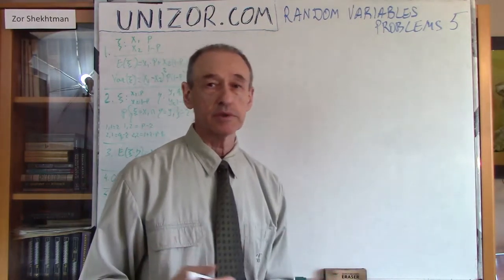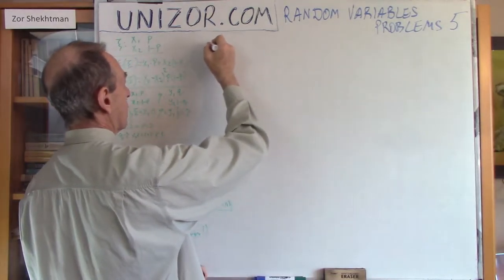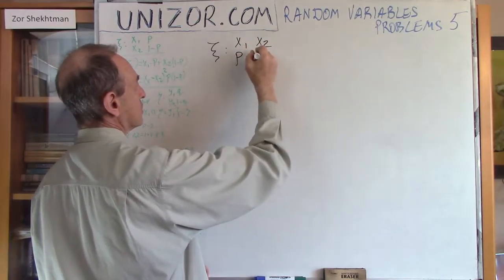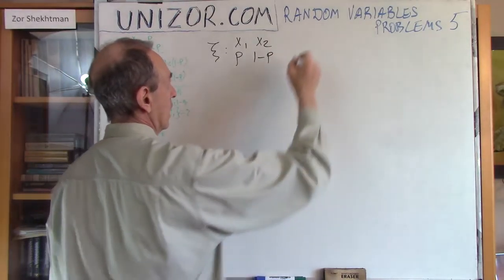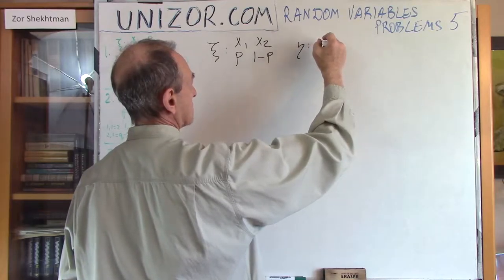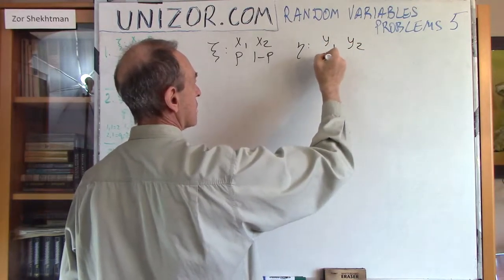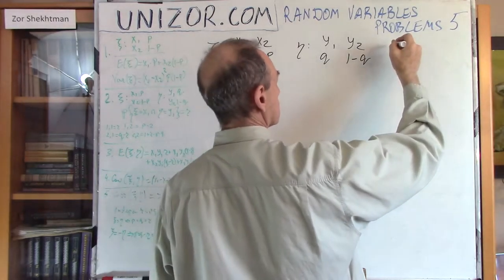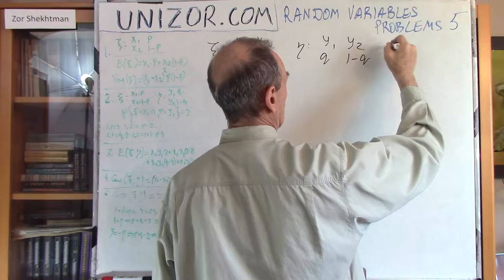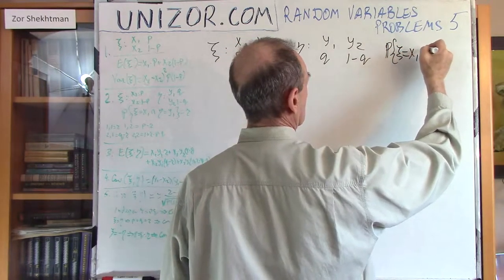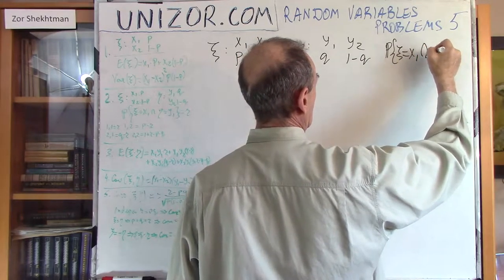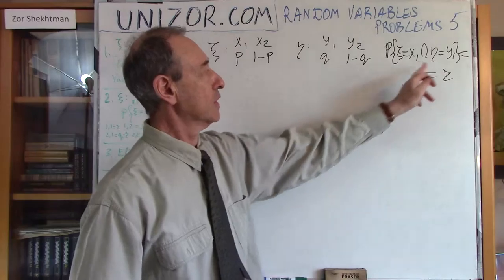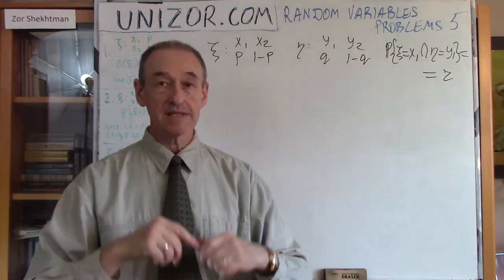Let me just repeat a little bit what I did in the previous lecture. I introduced two random variables: xi, which takes value x1 or x2 — only two values — with corresponding probabilities p and 1-p. And variable eta, which has values y1 or y2, also only two values, with corresponding probabilities. I also specified the combined probability of xi taking x1 and eta taking y1 as some number r.